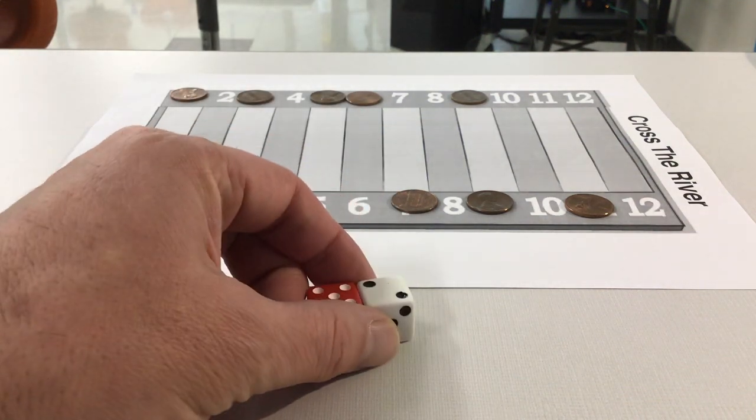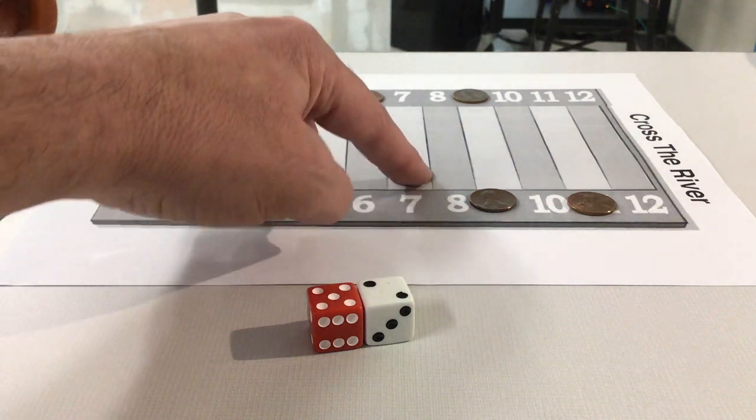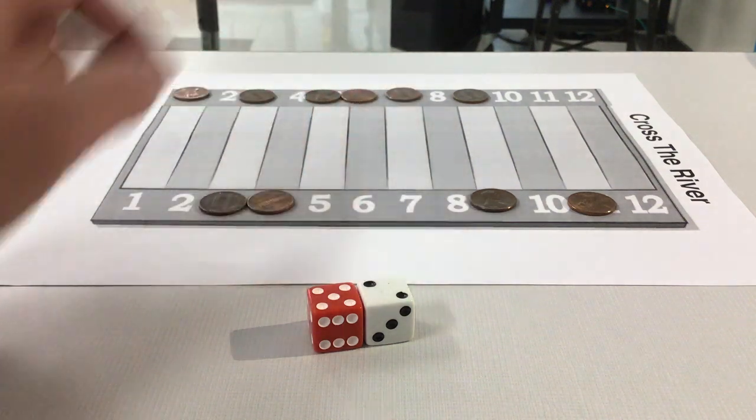They're going to roll the dice, and you want to take the sum of the two numbers. So five, six, seven. So I'm going to go to seven on my side, and if I have a penny there, I'm going to slide it across the river.